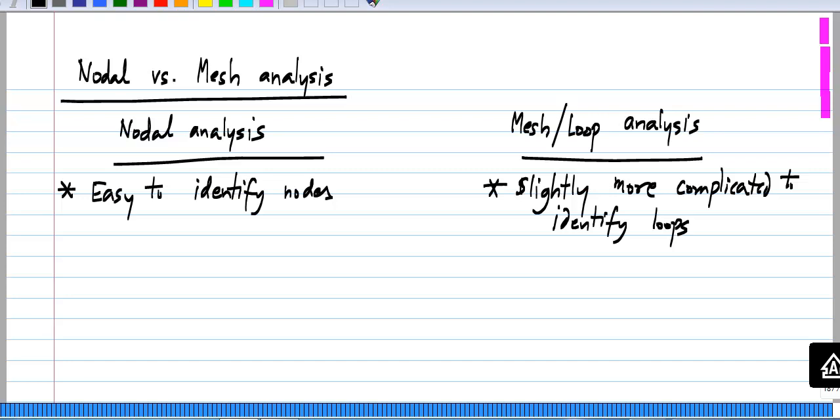One case where, especially for hand analysis, mesh analysis may be more useful is that you visibly see that there are a small number of loops, but each loop has a number of components in series. In that case, it is easier to do mesh analysis or loop analysis compared to nodal analysis, but by and large nodal analysis is what is normally used and it is also used in circuit simulators.